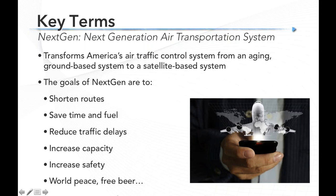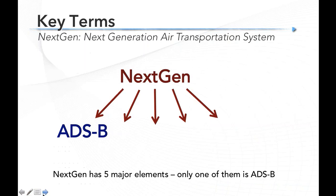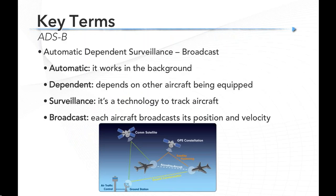What does ADS-B stand for? Automatic Dependent Surveillance Broadcast. When you take it apart, it actually makes sense. It's automatic because you don't have to do anything — it's working in the background. It's dependent on other aircraft being equipped: you see them, and when you're equipped, they see you. The ground stations pick up your signal and air traffic control sees you. Surveillance, just like radar today, is used to track aircraft, and broadcast means your aircraft transmits its position and velocity once a second.